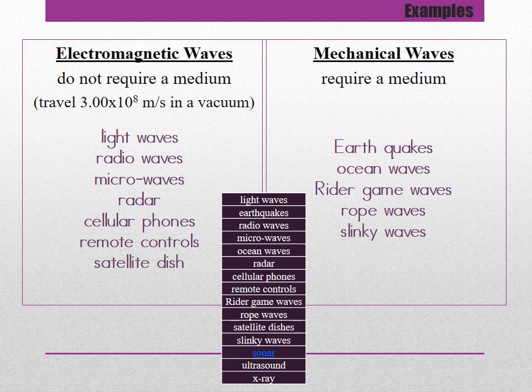Slinky waves require a slinky to make a wave, so they require a medium. Sonar usually gives students trouble. Sonar was developed by the military so the Navy could locate submarines. It works by a ship sending out a sound signal in water, then timing how long it takes for that sound to travel through the water, hit the submarine, and bounce back to the receiver at the bottom of the ship. Ultrasound sends sounds into our body, and depending on the density of the organs hit by that sound, it produces an image that doctors can read.